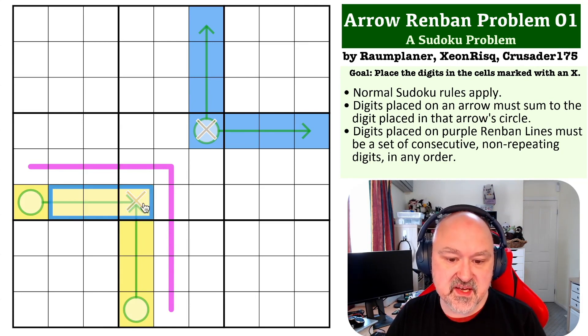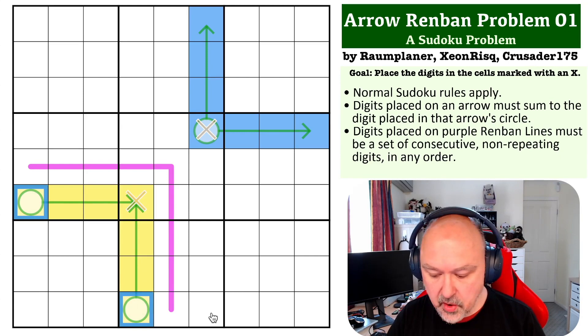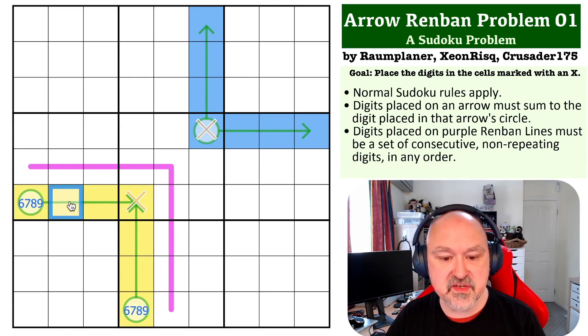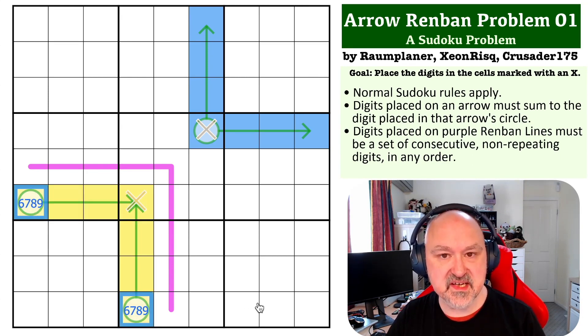So, if this is a three-cell arrow, this is a three-cell arrow. So, these can only be from six, seven, eight, nine, because the minimum you can put on this arrow is a one, two, three. So, these must be from six, seven, eight, or nine.